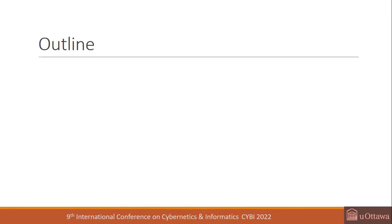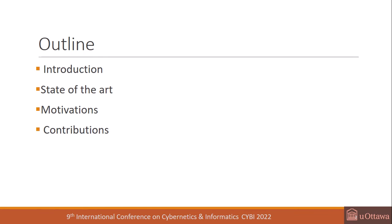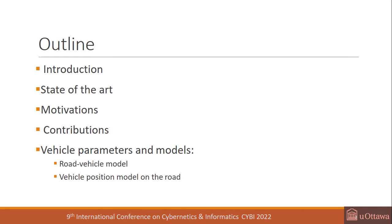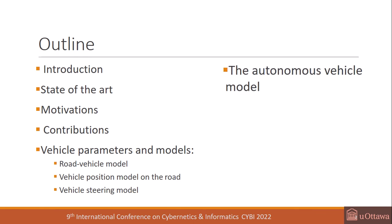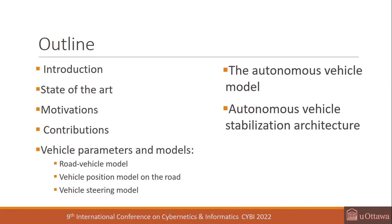I will start with the introduction, then the state of the art, after that the motivations and contributions. This paper is divided into four main sections: vehicle parameters and models (with three subsections — road vehicle model, vehicle position model on the road, and vehicle steering model), the autonomous vehicle model, the autonomous vehicle stabilization architecture, and multi-observer design.